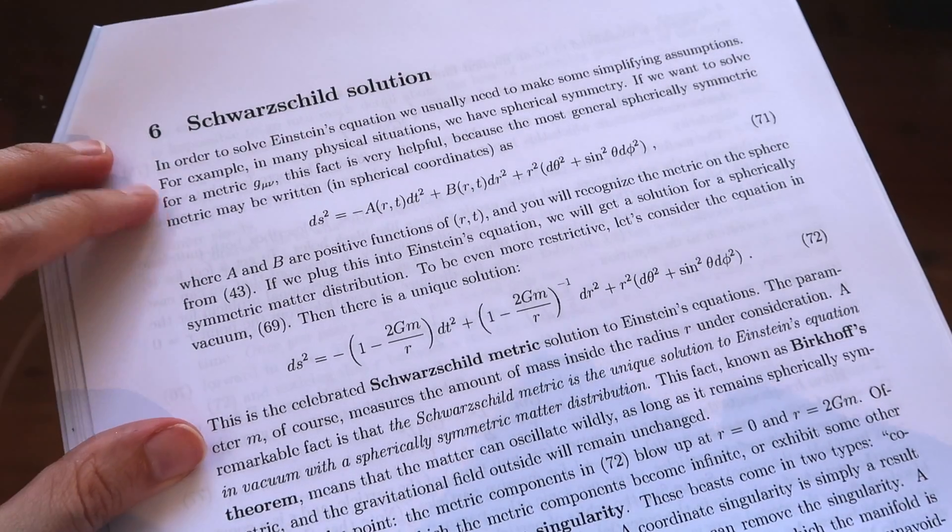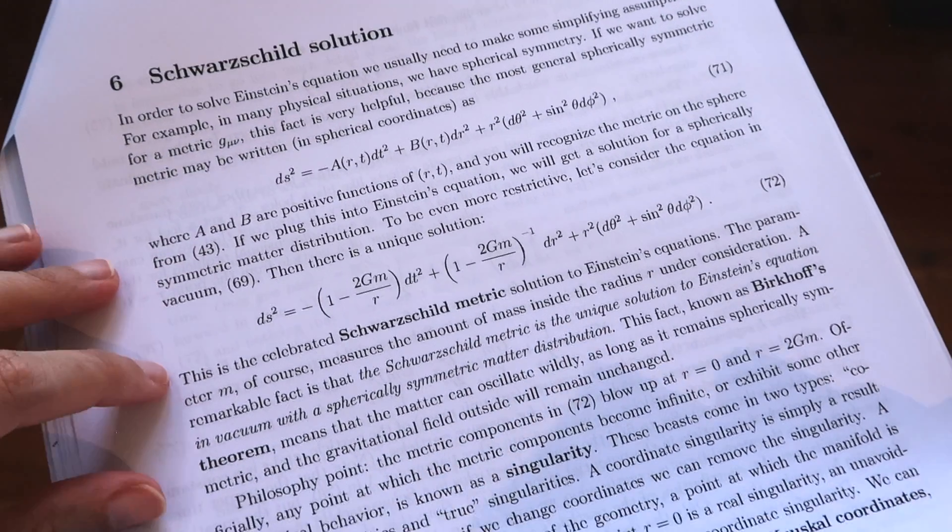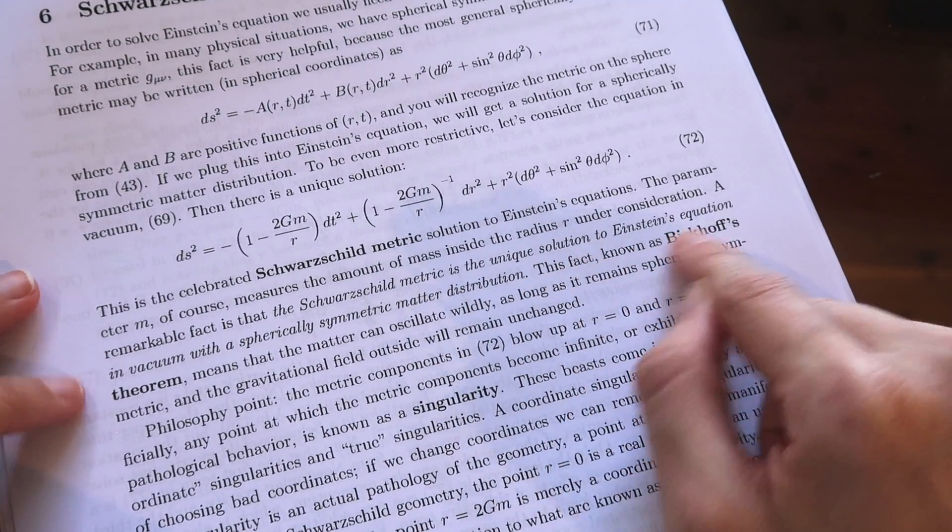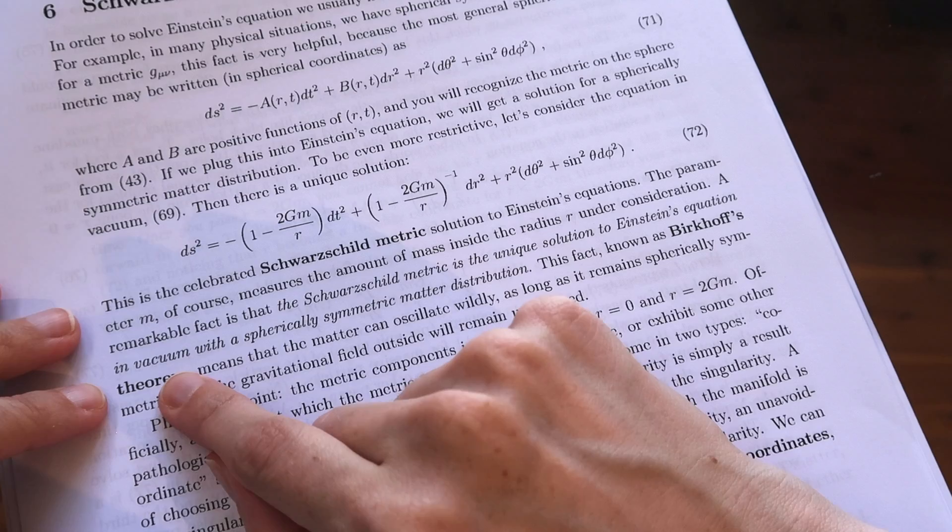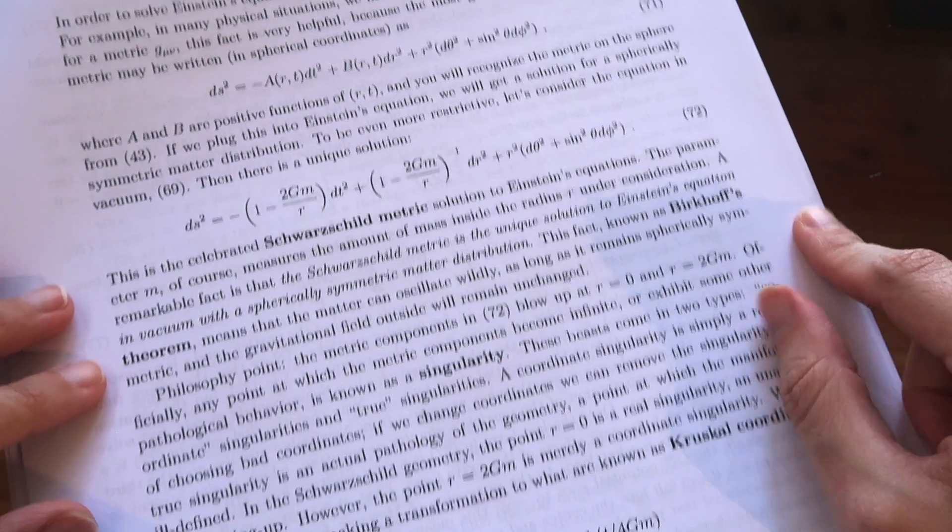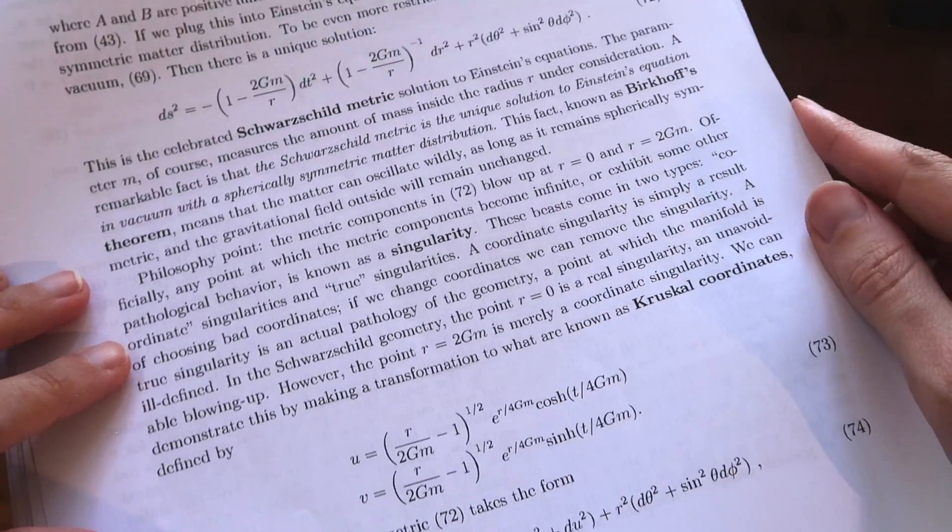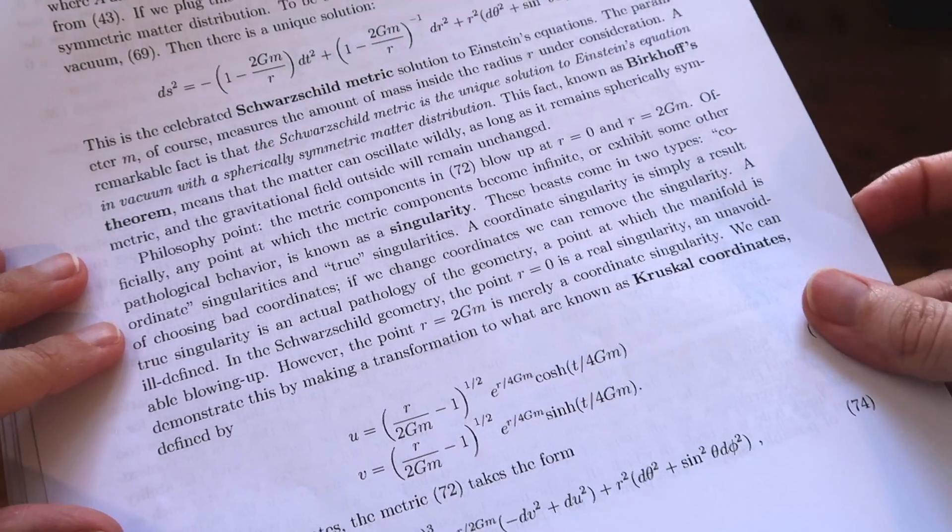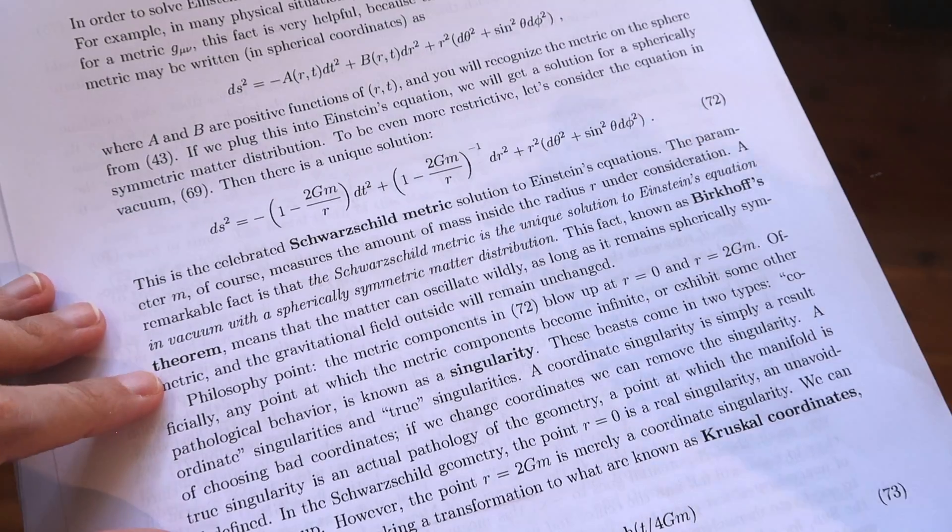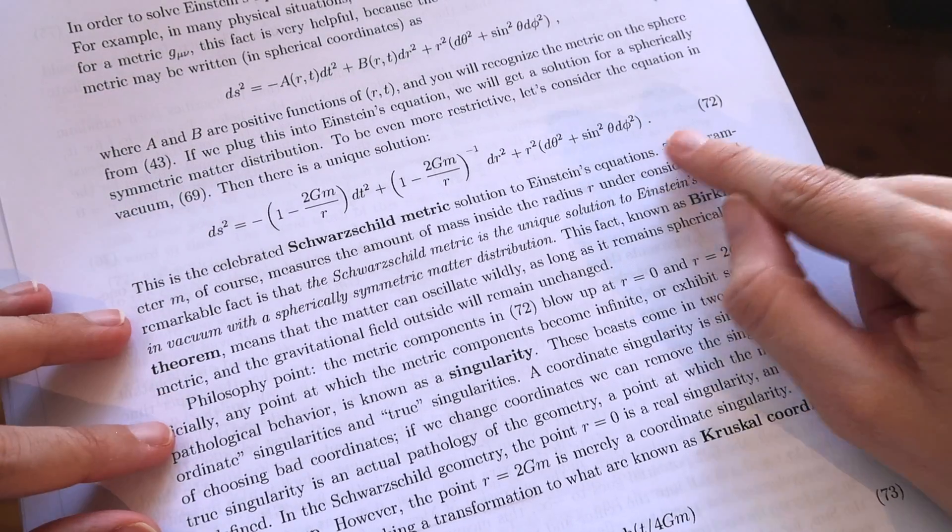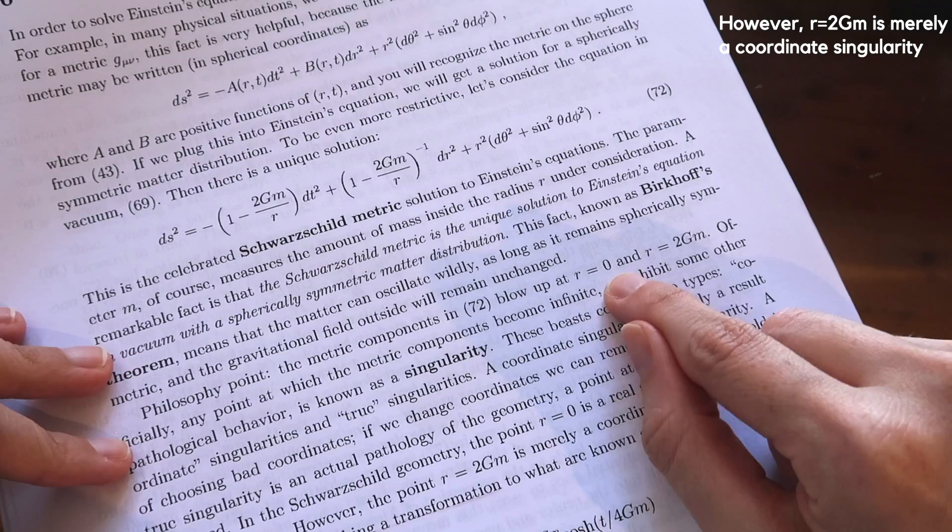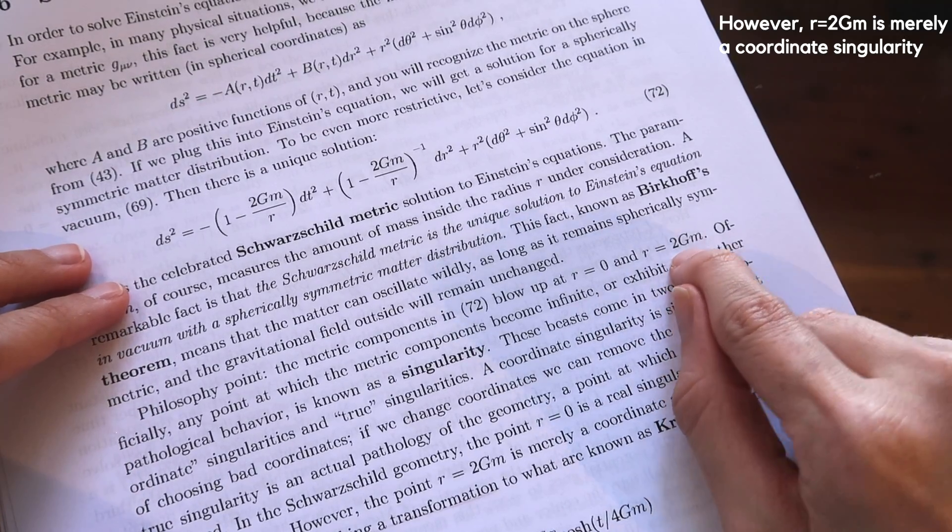Towards the end here we encounter the Schwarzschild solution. It says here that the Schwarzschild metric is the unique solution to Einstein's equation in a vacuum with a spherically symmetric matter distribution. So this is perhaps a slightly more physical interpretation that we can use to kind of understand what's going on out there in space. There are a couple of places where this solution does have singularities. They would be at r equals to zero and r equals to 2gm.